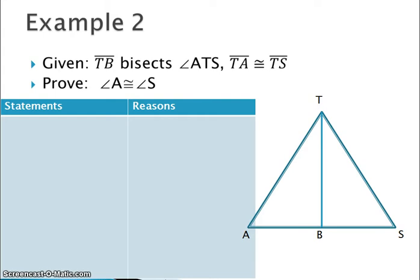Let's list our givens first and we'll also mark it on our diagram. So I have that TB bisects angle ATS and TA is congruent to TS. So TA is congruent to TS.